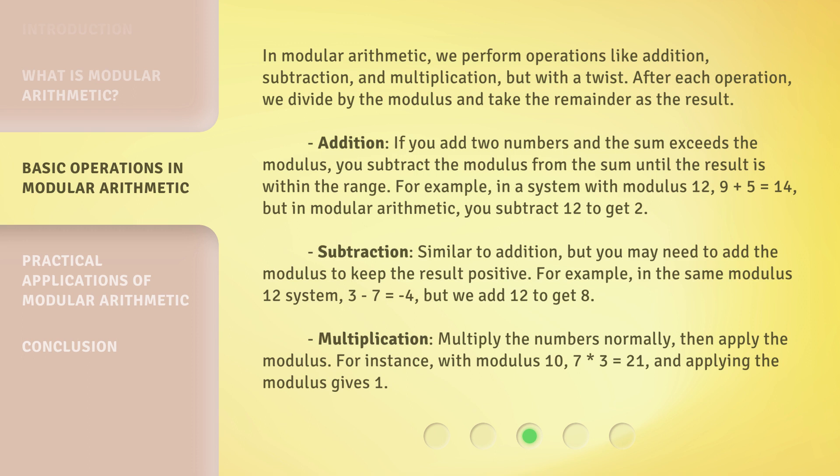Addition: if you add two numbers and the sum exceeds the modulus, you subtract the modulus from the sum until the result is within the range. For example, in a system with modulus 12, 9 plus 5 equals 14, but in modular arithmetic, you subtract 12 to get 2.